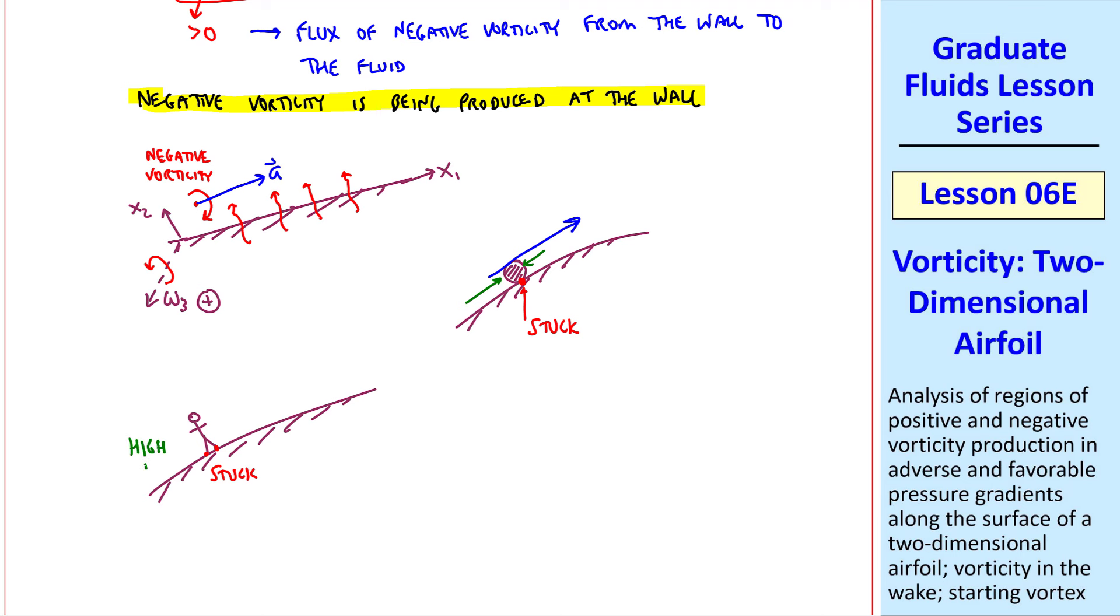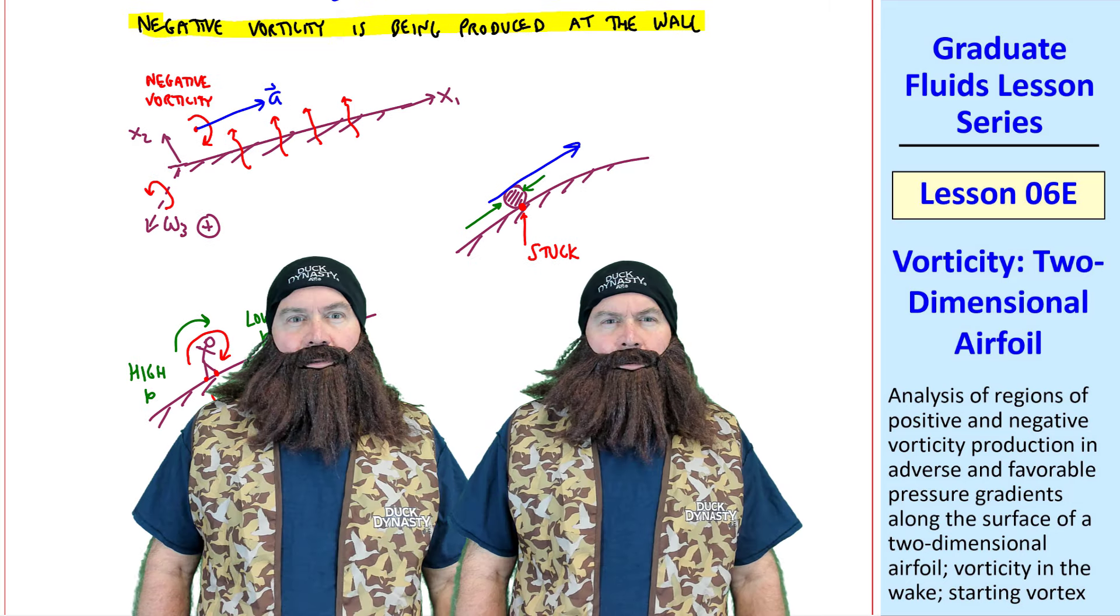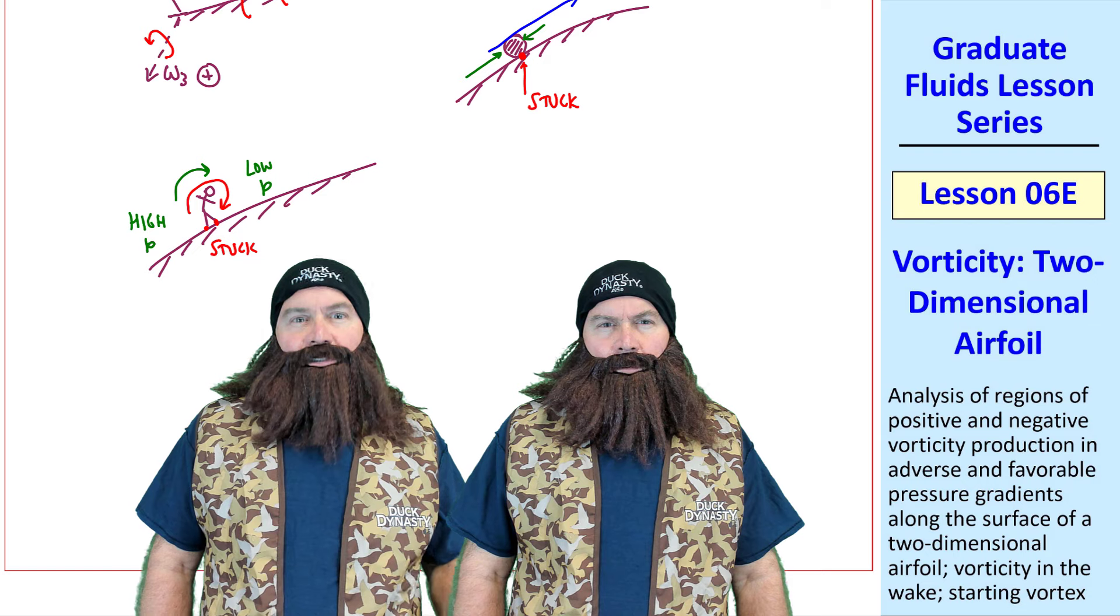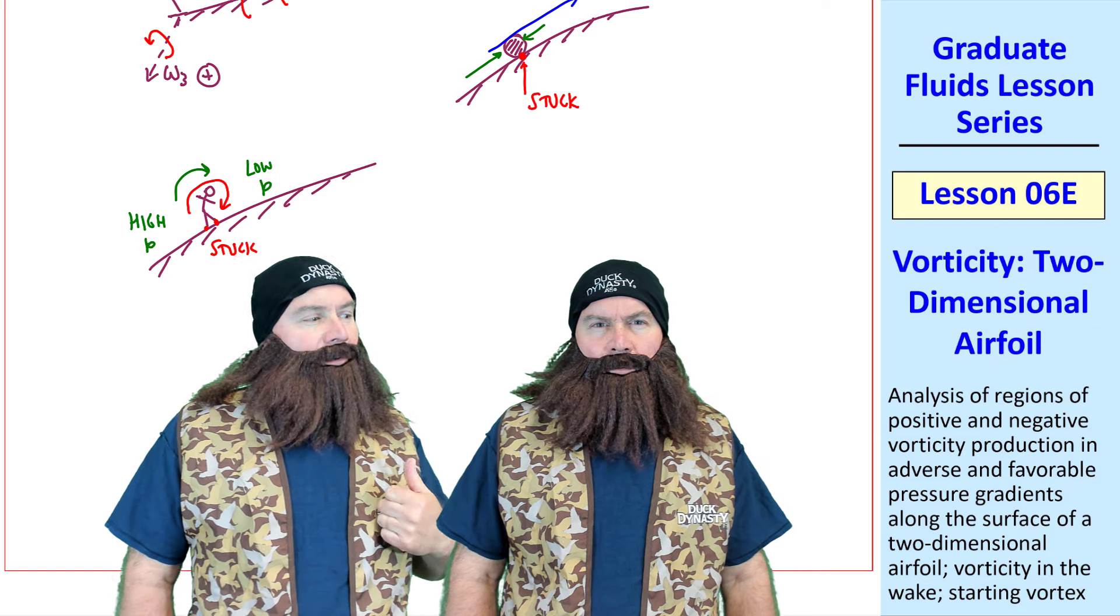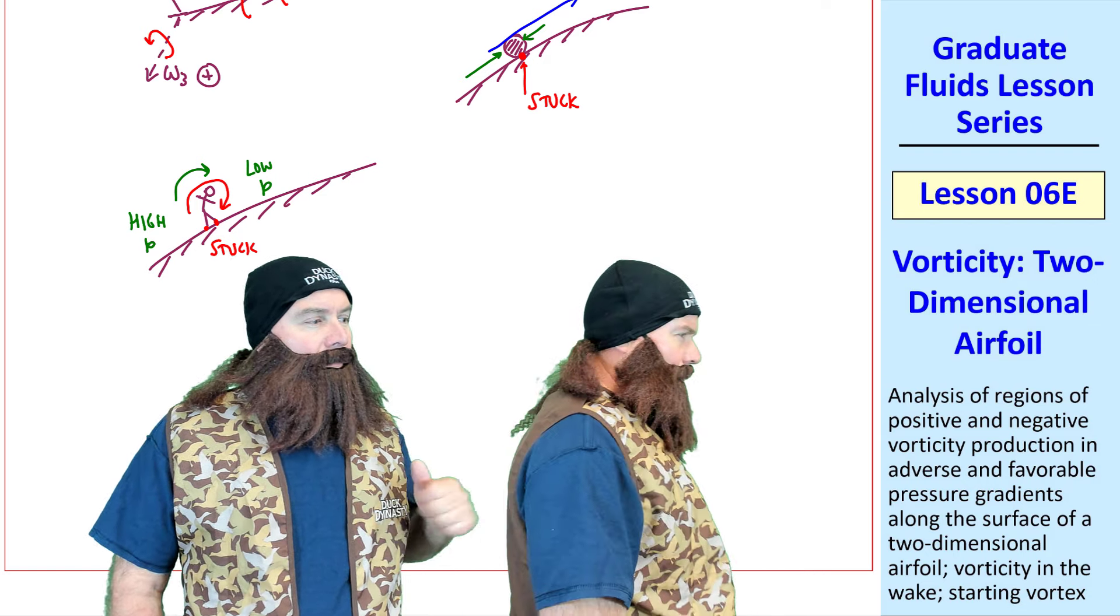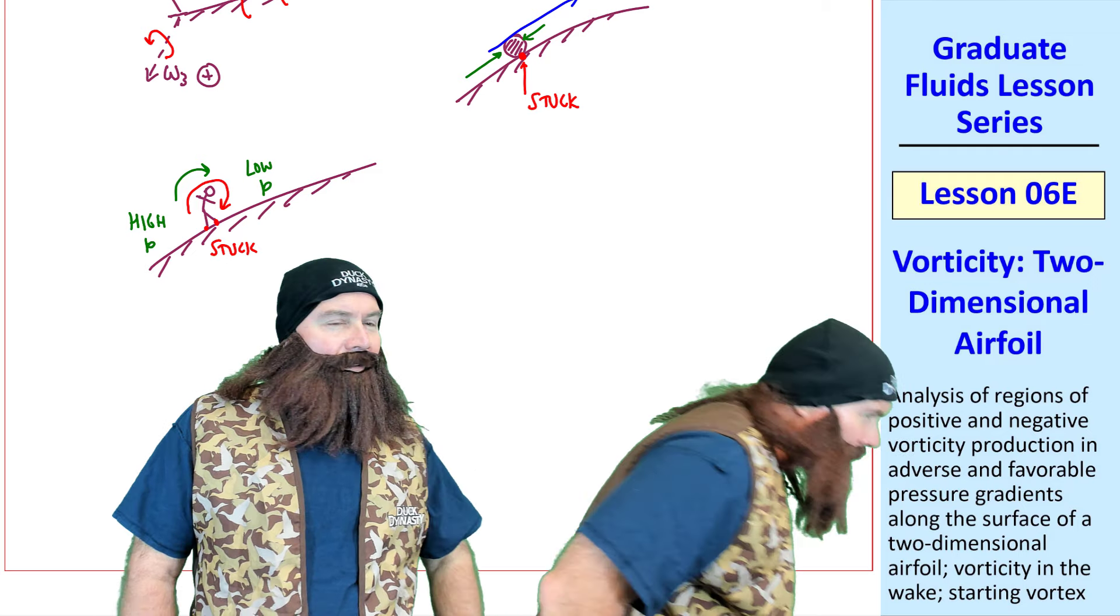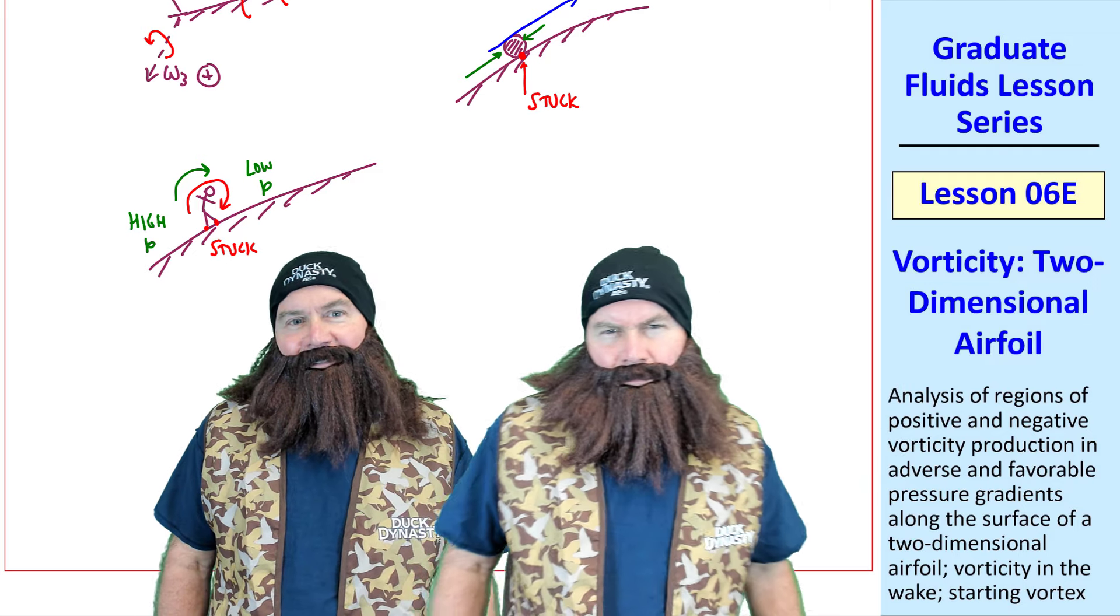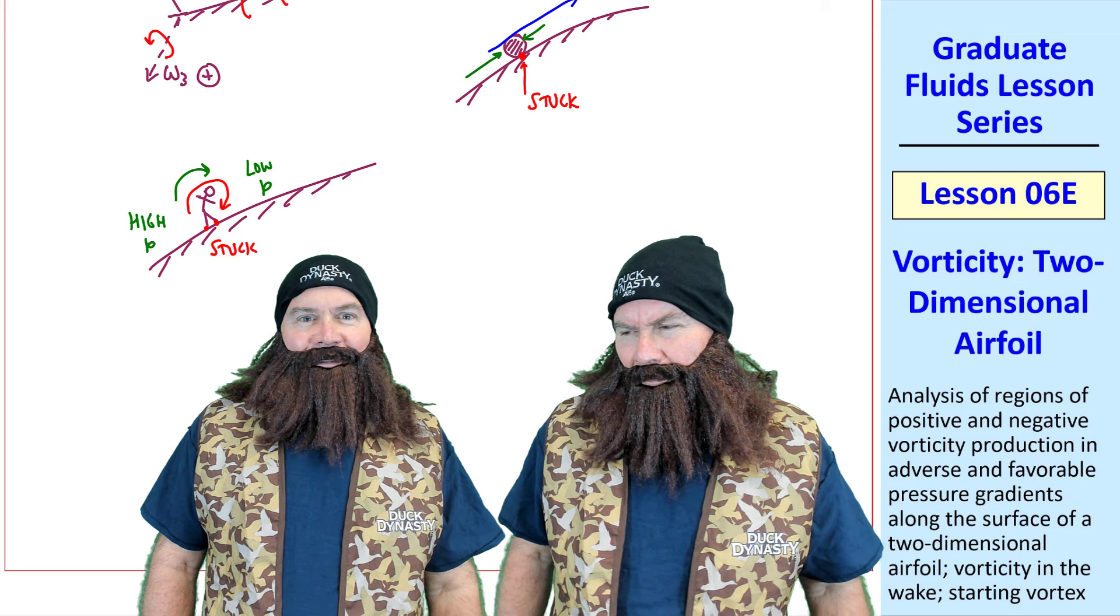But because of the pressure gradient, the pressure on his left side is higher than the pressure on his right side. But since his feet are stuck to the ground, the pressure tends to make him tilt towards the low pressure. In other words, the person will rotate clockwise, which is a negative vorticity. I'll demonstrate that for you. Duck, turn to your side. Thanks, Duck and Dick, for that illustration. You're welcome.